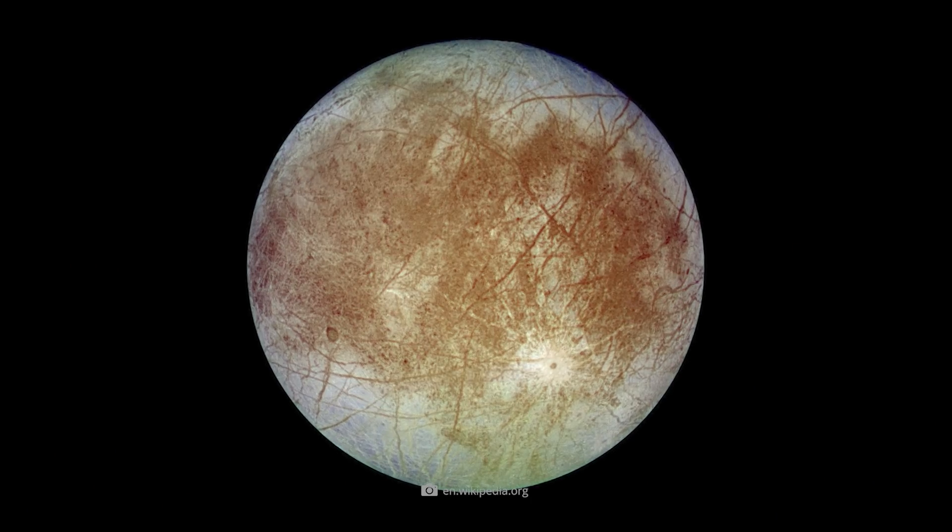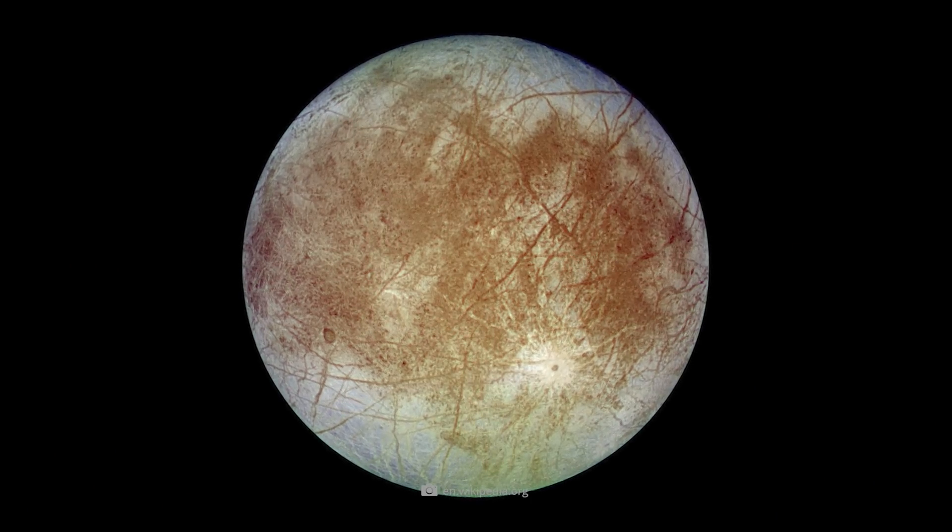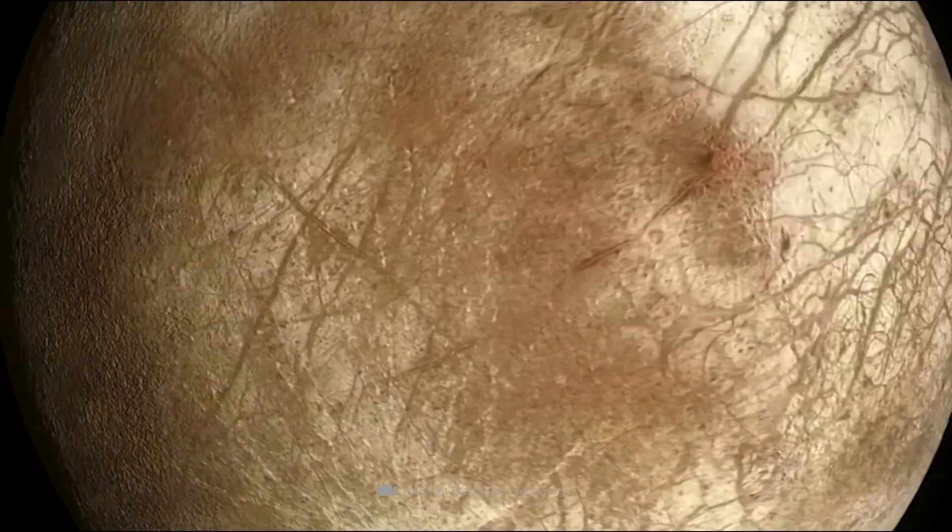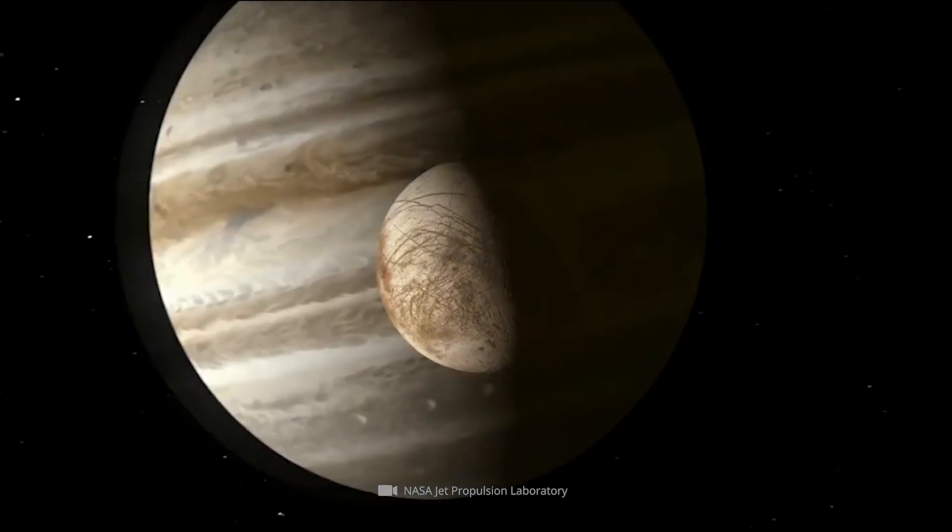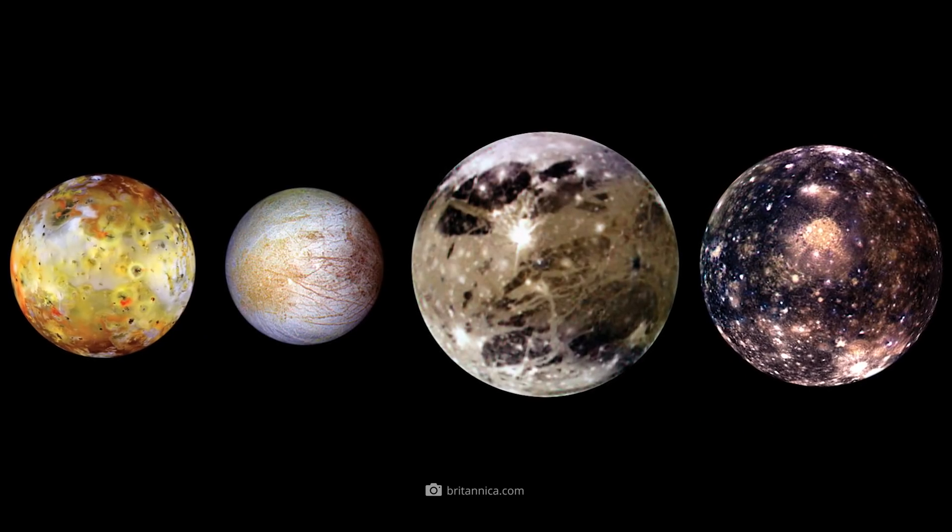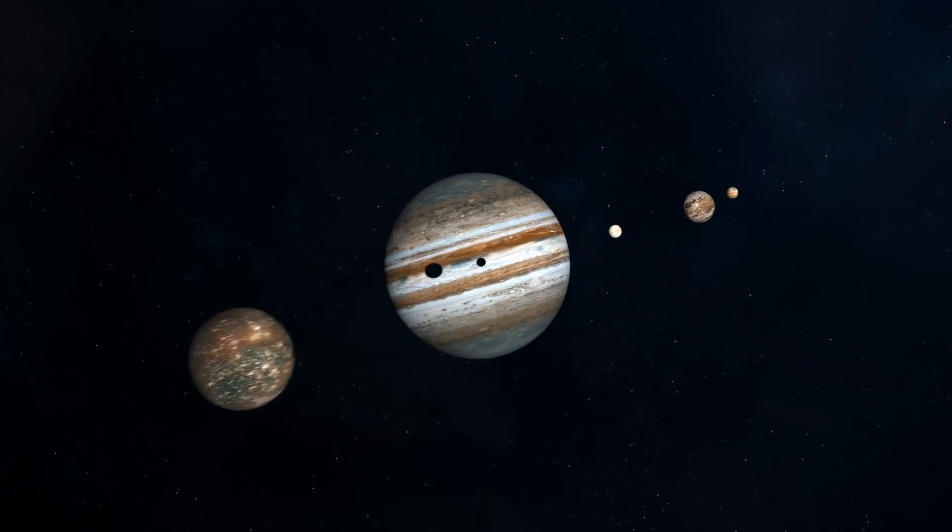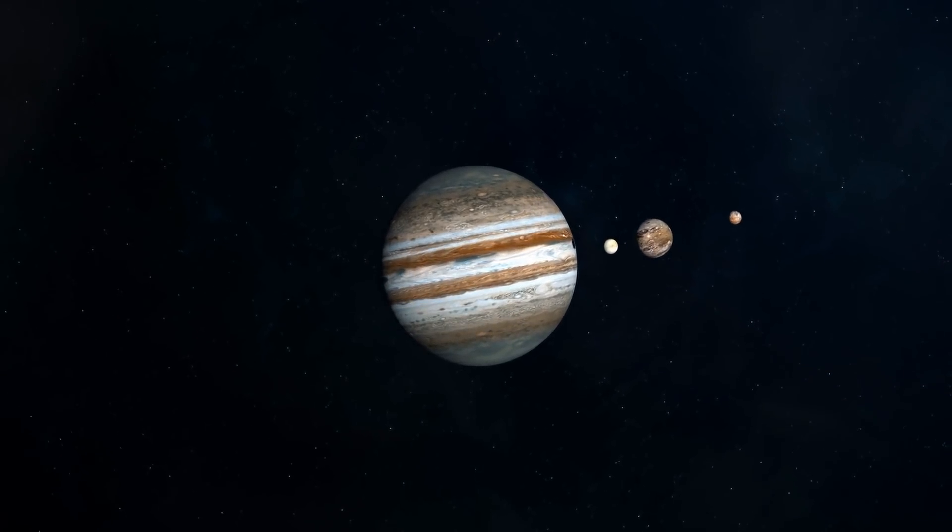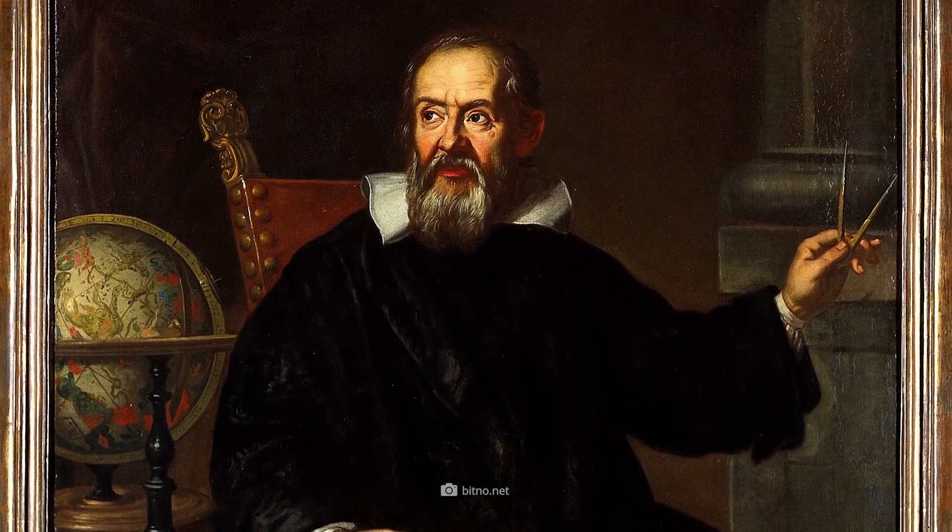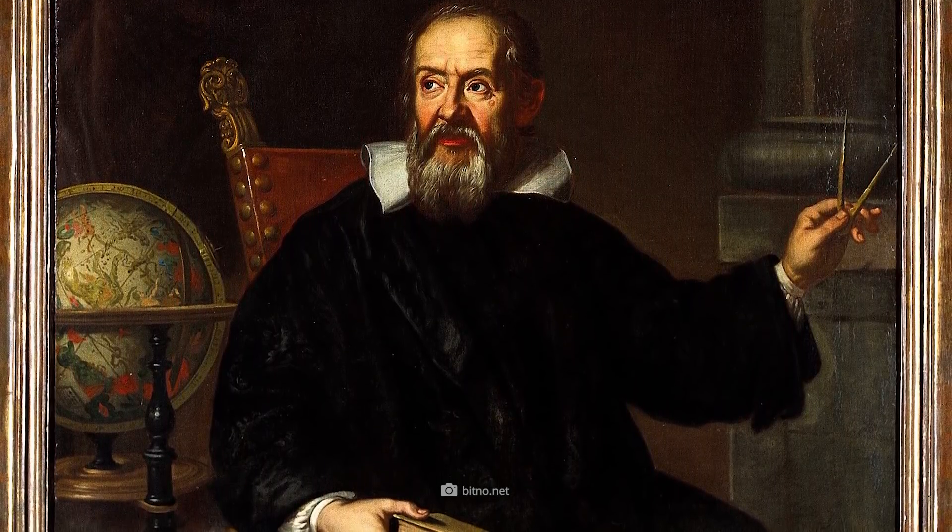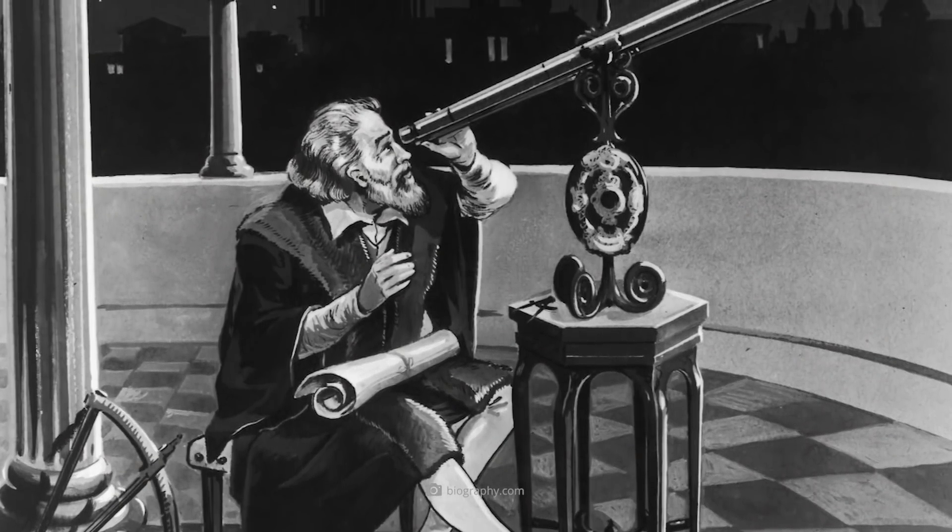With a diameter of about 1,939 miles, Europa is the smallest of Jupiter's four large satellites, also known as the Galilean moons. As the name suggests, it was none other than Galileo Galilei who added these celestial bodies to the star charts at the beginning of the 17th century.